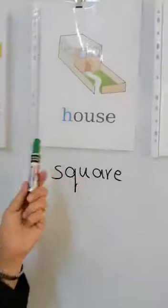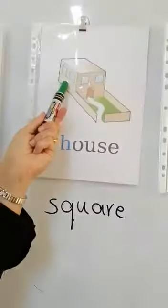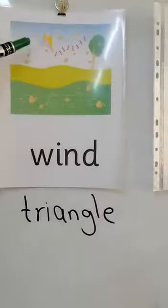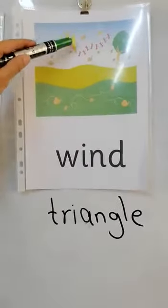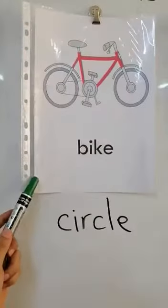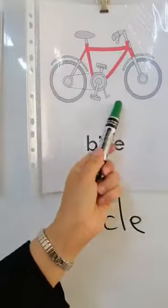Shapes are everywhere. Look at this house. The windows look like square. Look at the kite. We can see triangles. Look at the bike. We can see circles.